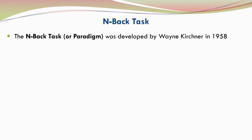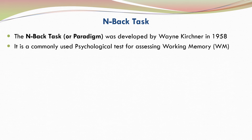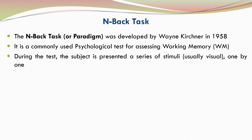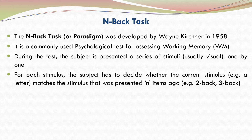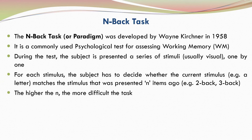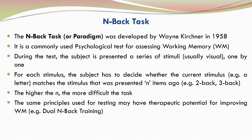The N-back task or N-back paradigm was developed by Wayne Kirchner in 1958. It is a commonly used psychological test for assessing working memory. During the test, the subject is presented a series of stimuli one by one. For each stimulus, the subject has to decide whether the current stimulus — for example, an alphabetical letter — matches the stimulus that was presented N items ago. If N is 2, it is 2-back; if N is 3, it is 3-back, and so on. The higher the N, the more difficult the task. The same principles used for testing may have therapeutic potential for improving working memory.